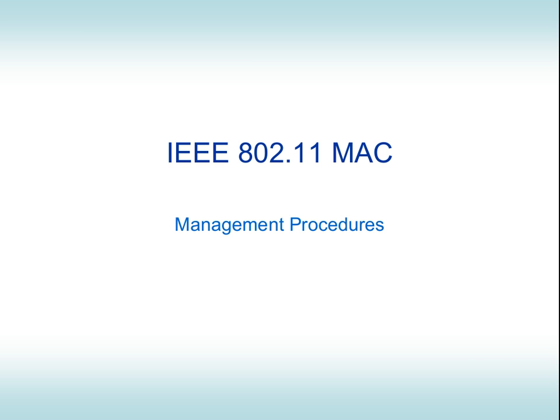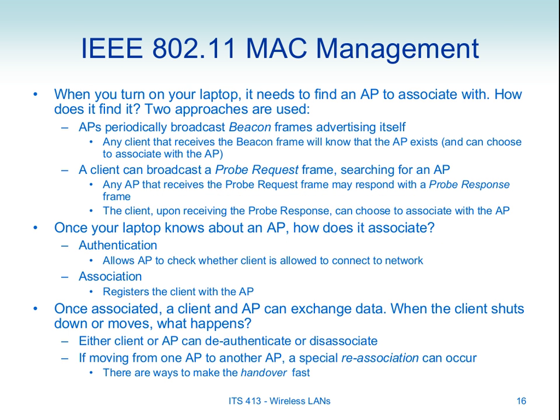We're looking at the medium access control layer of 802.11 MAC. There are two parts: the part to manage the network and the part to send data, the data transfer phase. To manage the network, we need to discover an access point. There are two ways: beacons sent by access points, or probe requests sent by your client broadcast to access points. Once you know about an access point, you select one — either user-selected from a list or automatically, for example selecting the WSIT access point.